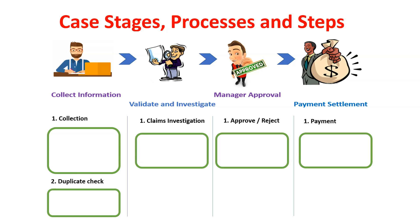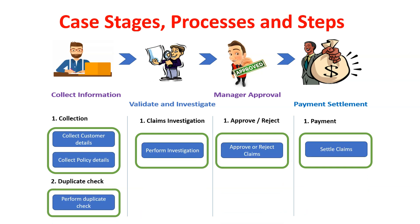Once we define the stage, we can drill down further to create processes under each stage. For example, in the first stage — collect information — I can have two processes: a collection process where I collect customer details and policy details, and a second process for some kind of duplicate check. Under one stage you can have one or more multiple processes. Then you can define steps under each process. In the collection process I can have two steps: collecting customer details and collecting policy details. Under each process you can have one or more steps defined.